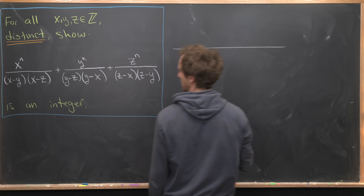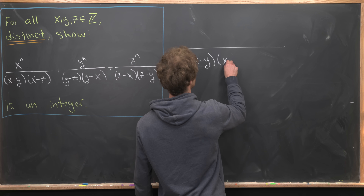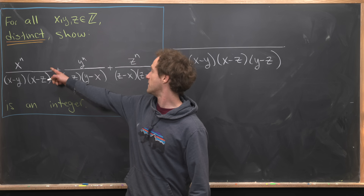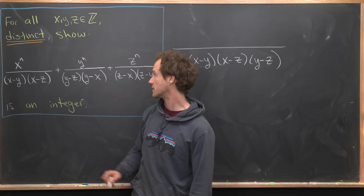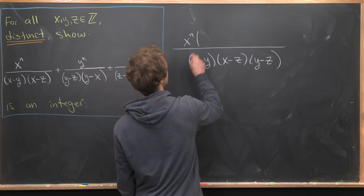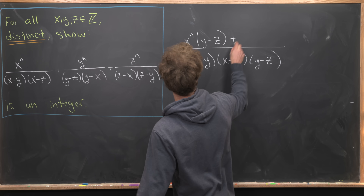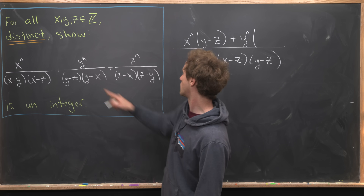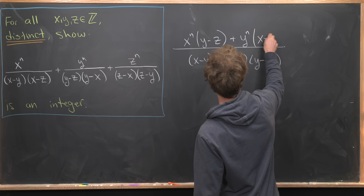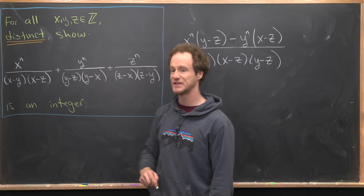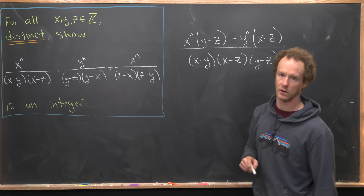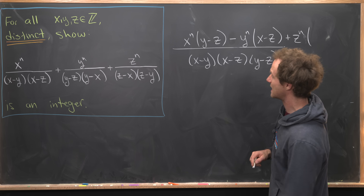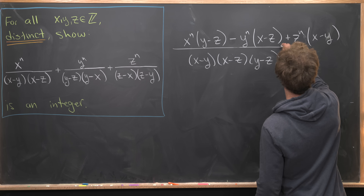Let's build each term up to have the common denominator (x minus y)(x minus z)(y minus z). The x^n term needs to be multiplied by (y minus z). The y^n term needs to be multiplied by (x minus z), but with a minus sign since (y minus x) differs by a sign from (x minus y), so we write minus (x minus z). For the z^n term, each factor is out of order picking up a minus one each, but those cancel, so we multiply by (x minus y).